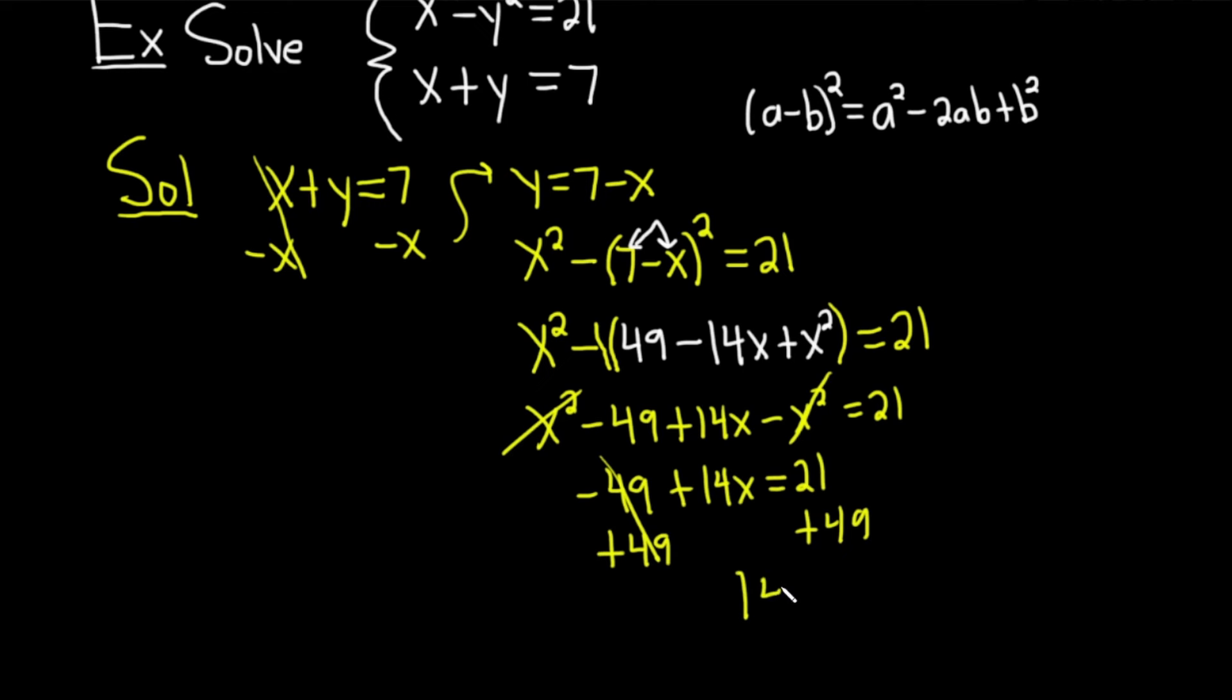We end up with 14x equals, let's see, 49 plus 21 is 70. And then divide by 14, divide by 14. It's going to give us exactly 5. What a nice answer. So x equals 5. That is the x-coordinate of our solution.